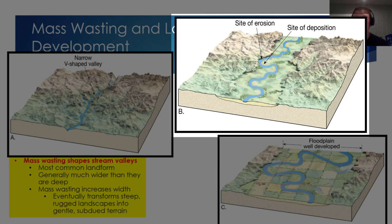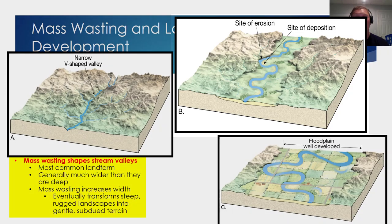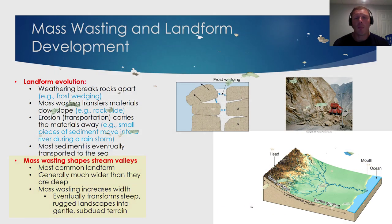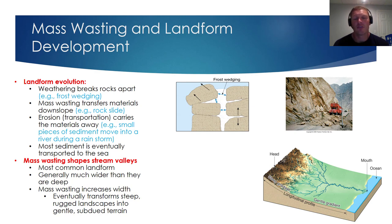This process ultimately starts to widen out the stream valley. The last stage of development — after weathering, mass wasting, and erosion have occurred over a very long period of time — is an extremely wide U-shaped stream valley. These broad valleys often have meandering rivers, which are rivers that curve a lot.